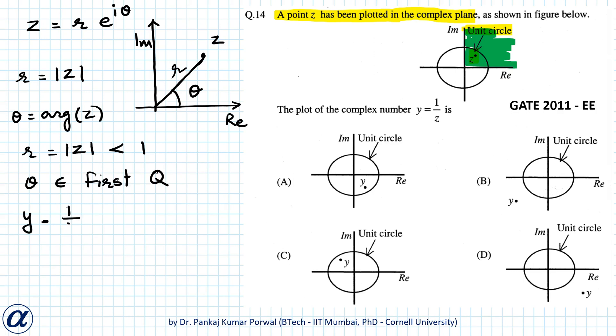Now y equals one upon z, that will equal one upon r e to the power i theta, that is equals to one upon r e to the power minus i theta.